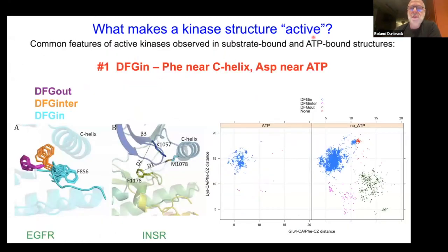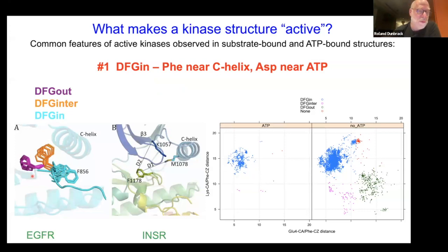Looking at these 40 structures and ATP-bound structures, we notice the position of the phenylalanine and aspartate of the DFG motif. There are basically three clusters: some phenylalanines are underneath the C-helix (DFG-in, cyan), some are way over in a different position (DFG-out, magenta), and some are in between. In DFG-in, the aspartate is in the active site and the phenylalanine is in the pocket under the C-helix. In DFG-out, the aspartate has flipped out and the phenylalanine replaced it. ATP-bound structures are almost all DFG-in.